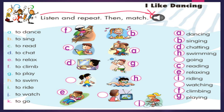We continue with letter J: to watch, mirar — watching. Excellent. Watching, mirando. Y hemos unido con la imagen donde vemos al niño que está mirando la televisión. Watching TV. And finally: to go, ir — letter K — going. Excellent. Going, yendo. Y hemos unido también con la imagen donde vemos a la niña que está yendo. Going. Excellent, my little kids.